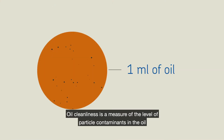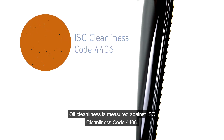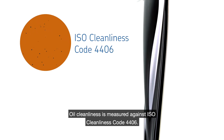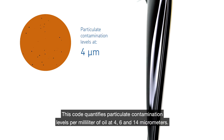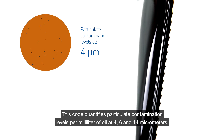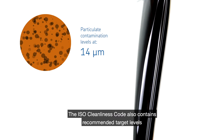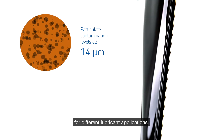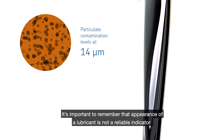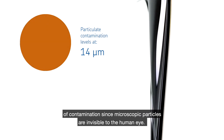Oil cleanliness is a measure of the level of particle contaminants in the oil, including both insoluble and hard particles. Oil cleanliness is measured against ISO Cleanliness Code 4406, which quantifies particulate contamination levels per milliliter of oil at 4, 6, and 14 micrometers. The ISO Cleanliness Code also contains recommended target levels for different lubricant applications. It's important to remember that the appearance of a lubricant is not a reliable indicator of contamination, since microscopic particles are invisible to the human eye.